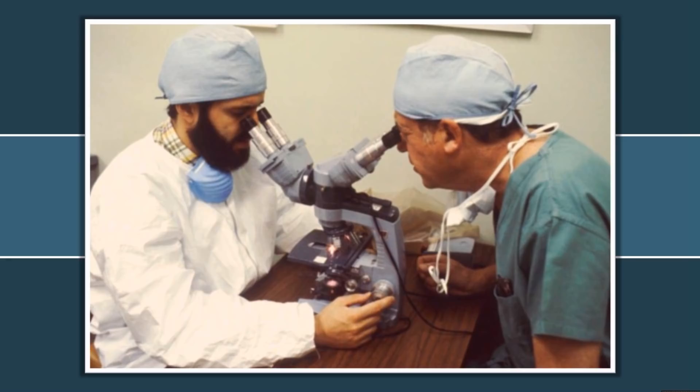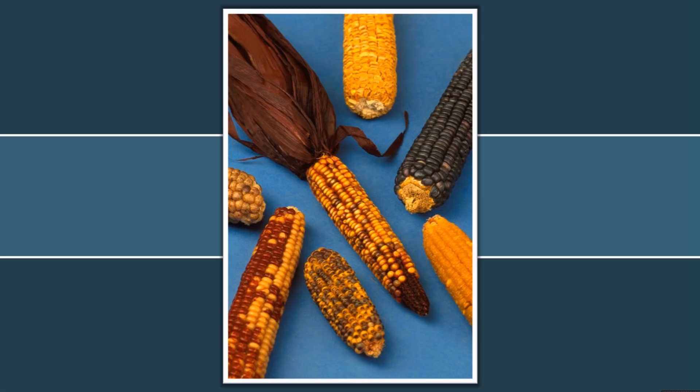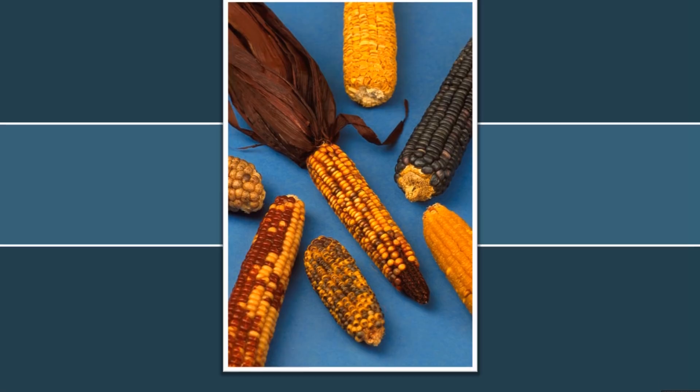Scientists have known about coronaviruses since the 1960s, although it's thought that their most common recent ancestor dates back to around 8000 BC — about 10,000 years ago. To put this into perspective, that's roughly the same time that agriculture started to become the dominant form of life in South America.